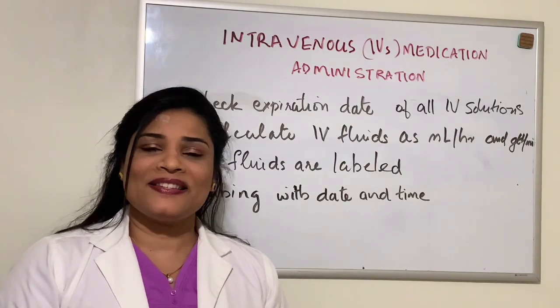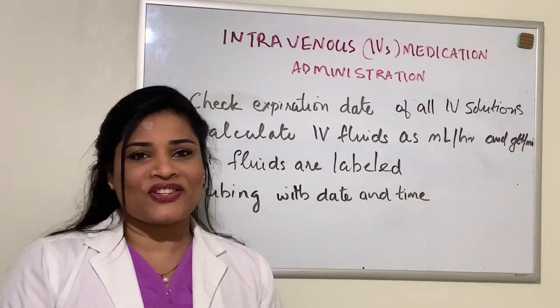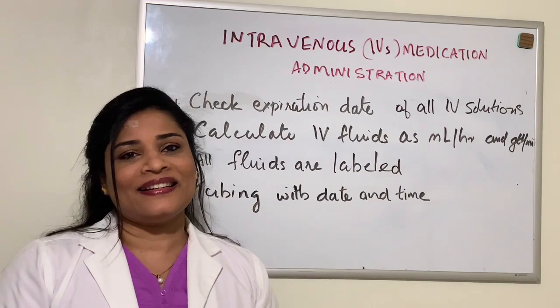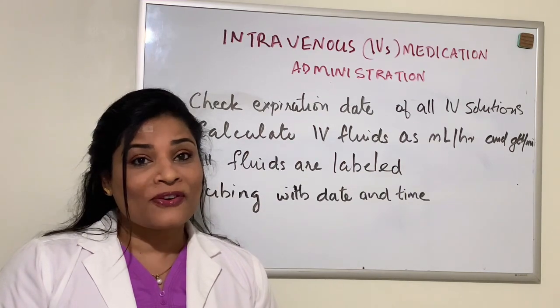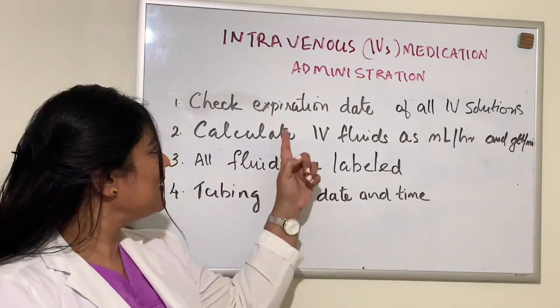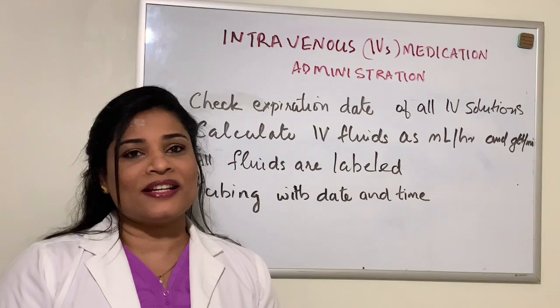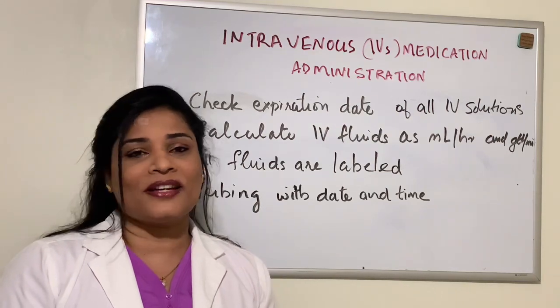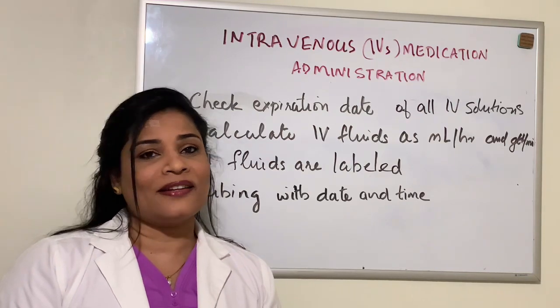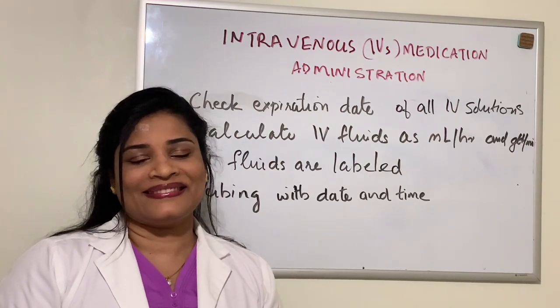Today I'm going to talk about how to prime an IV tubing. When administering intravenous medications, make sure that you follow four important steps. Number one: check the expiration date of all medications and all fluids that you're hanging. Do not use any medication that has expired.